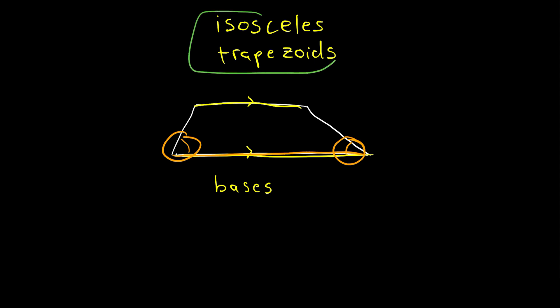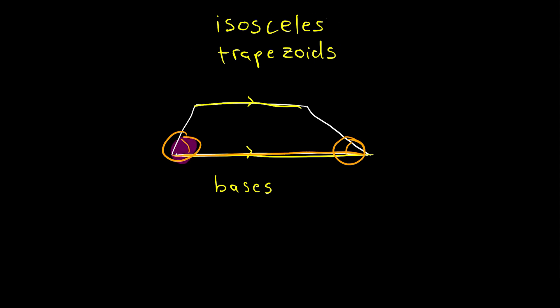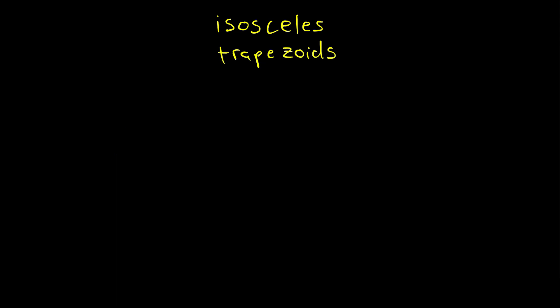An isosceles trapezoid is a trapezoid that has a pair of congruent base angles. So if these two angles are congruent, then this would be an isosceles trapezoid. Now let me try drawing an isosceles trapezoid and we'll talk more about it. If you want a more general introduction to trapezoids, check out my lesson introducing them — I'll leave a link to it in the description.